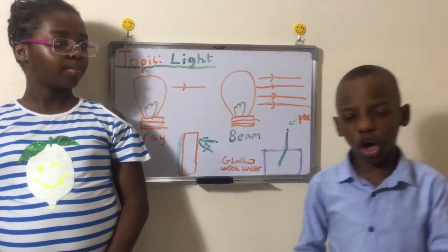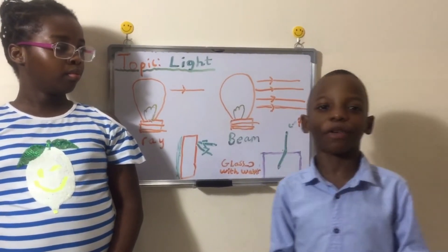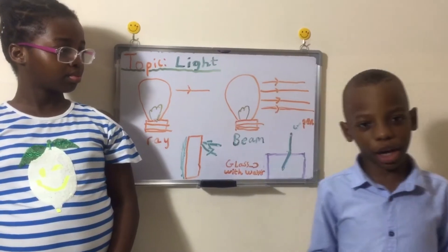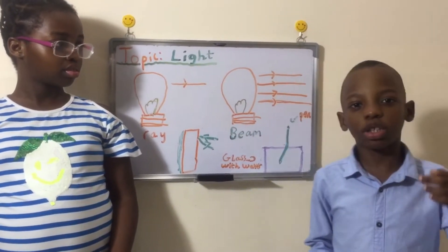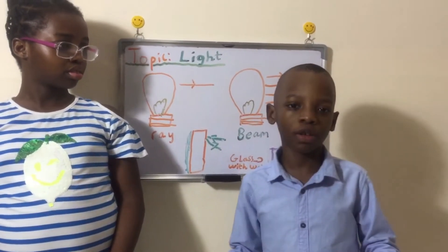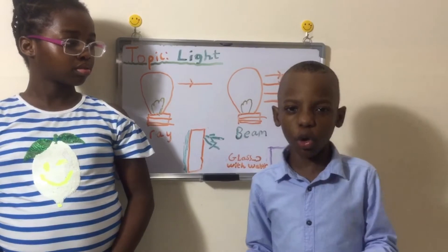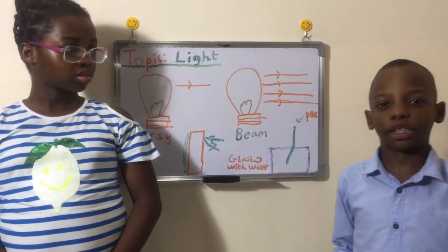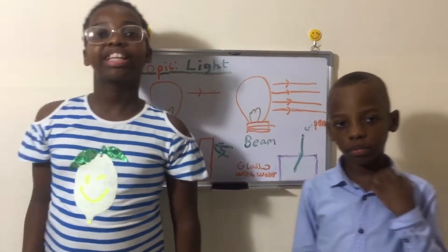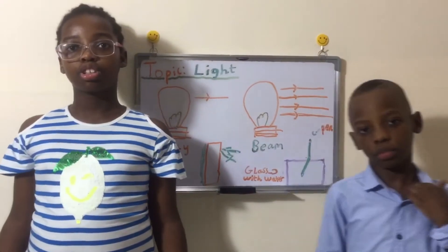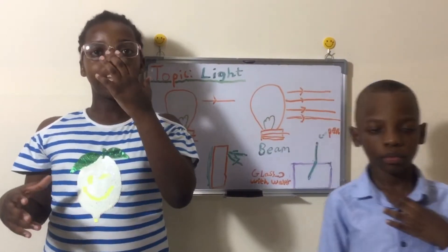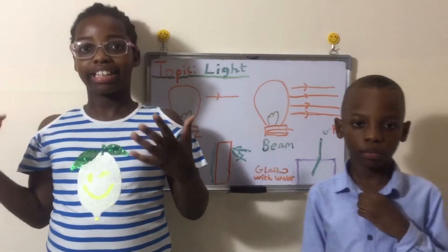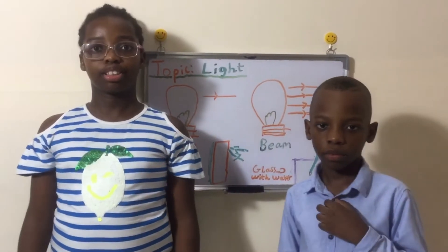Non-luminous objects are objects that rely on other things to give them light. These include the moon, and also you, animals, and plants. All of these things need other light sources.